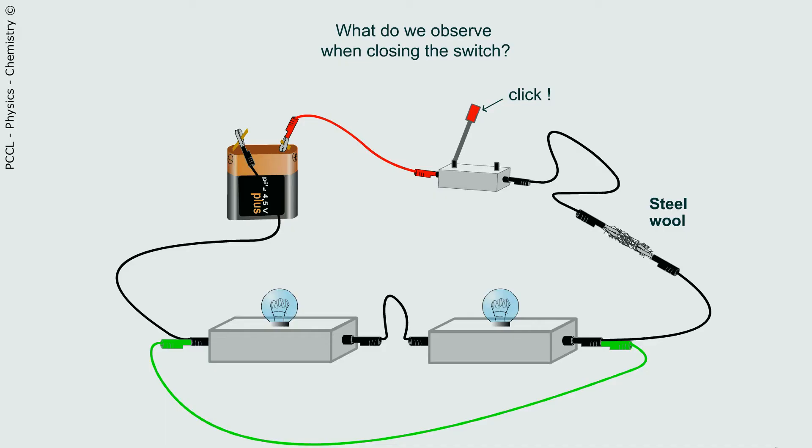In the first situation, we are asked what you will observe when you turn on the switch. We observe the heating of the steel wool. It is observed that the bulbs did not shine.